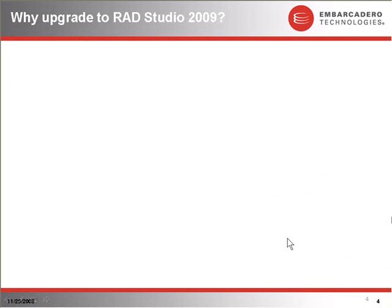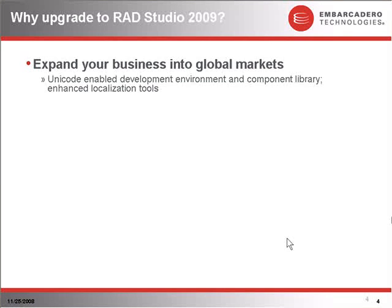Before we get started, let's talk about some basic reasons why you'd want to upgrade. First one is, you might want to upgrade to RAD Studio 2009 to expand your business into global markets. On the native side, and indeed on the .NET side as well with Prism, the entire product is Unicode enabled. You can build applications with Delphi, C++ Builder, and Prism that are Unicode capable — that consume, produce, process, and manage Unicode data. You can also translate your applications so that they display Unicode data in button captions, labels, list boxes, and all your controls. The entire product is Unicode enabled.